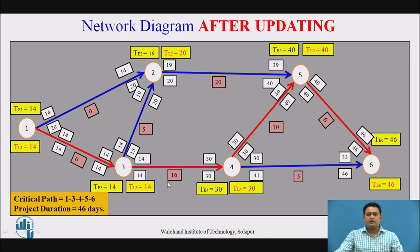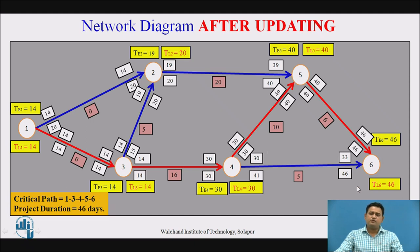This is the overall network diagram after updating. Again we follow the forward path to get the earliest start and earliest finish times for each activity and event, and follow the backward path to get the latest start time and latest occurrence time for each activity and event.